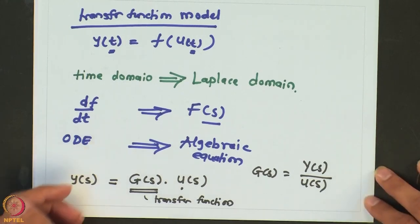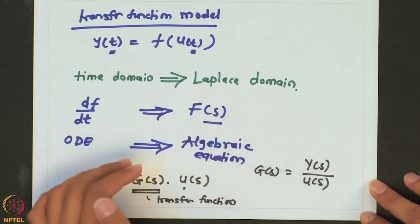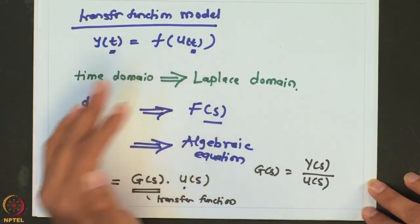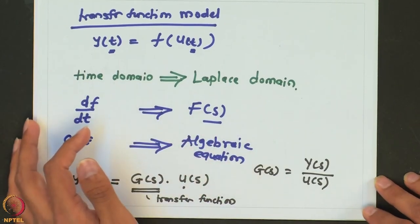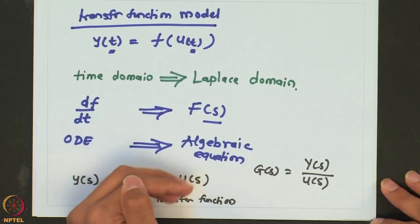The major limitation of transfer function based analysis is that we can use Laplace transforms only for linear functions. As long as the relationship between input and output is linear, we can use Laplace analysis. We will see that especially when processes are non-linear — which is quite common for chemical engineering systems — we would try to see how we can get over this requirement of linearity by linearizing a non-linear function. When we talk about a non-linear process, we will touch upon how to still use Laplace-based analysis.